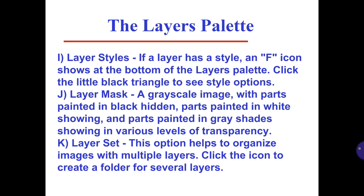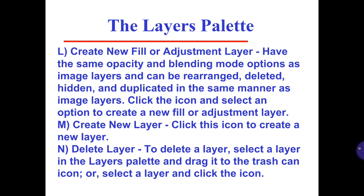Layer Mask: a grayscale image with parts painted in black (hidden), parts painted in white (showing), and parts painted in gray shades showing at various levels of transparency. Layer Set: this option helps to organize artwork with multiple layers — click the icon to create a folder for several layers. Create New Fill or Adjustment Layer: these have the same opacity and blending mode options as image layers and can be rearranged, deleted, hidden, and duplicated in the same manner as image layers — click the icon and select an option to create a new fill or adjustment layer.